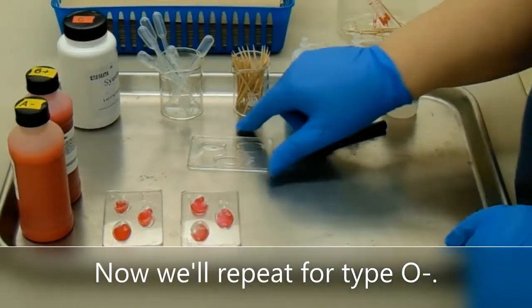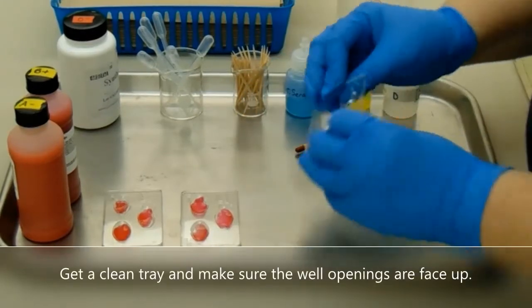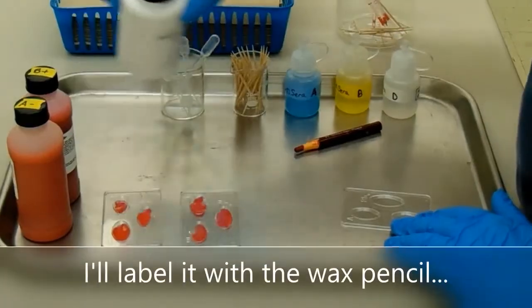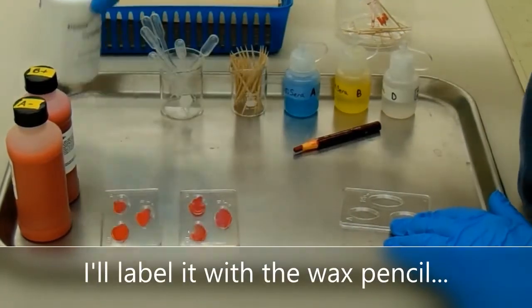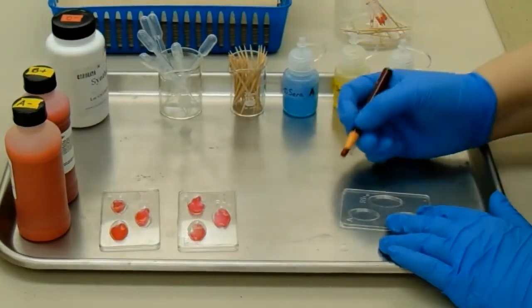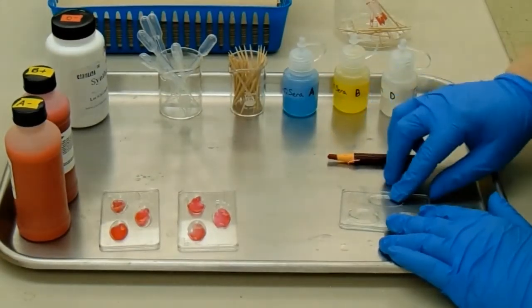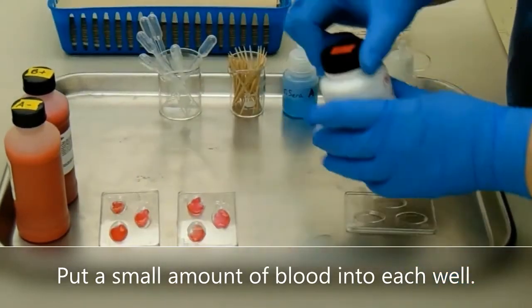Now we'll repeat for type O negative. Get a clean tray and make sure the well openings are face up. I'll label it with a wax pencil.